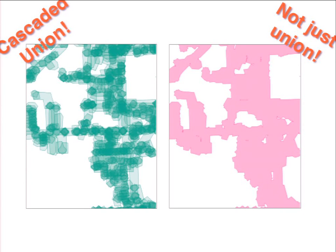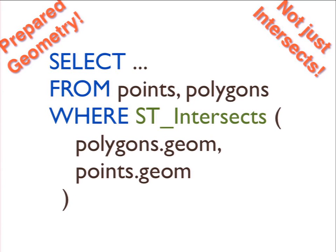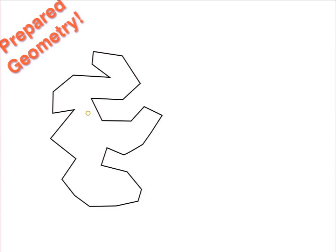Cascaded union works by taking the data to be unioned, figuring out which things are next to each other, and unioning those first — then unioning those results together, and so on. Each successive step results in fewer and fewer vertices, so they go faster as you work up the tree. Similarly, for queries using intersects, contains, or within, there's an optimization that takes advantage of the constant side of a spatial join and adds an index to it.